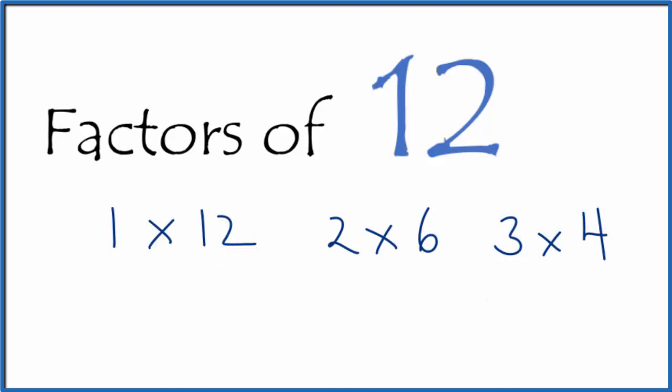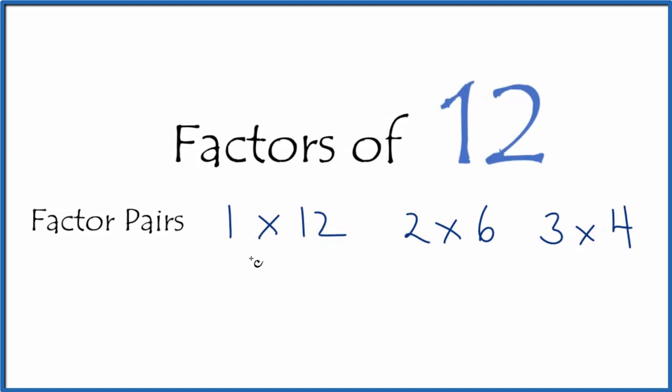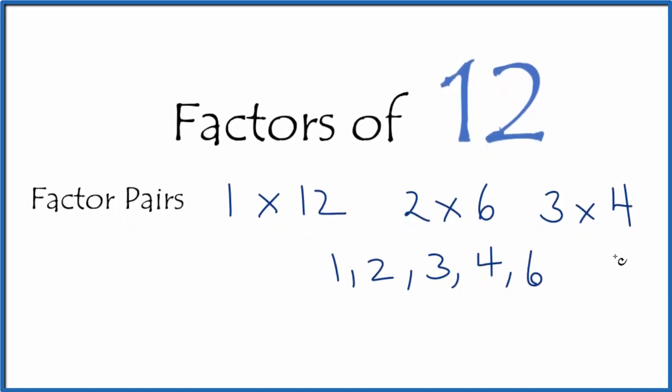We call these factor pairs. So we have the factor pairs of 12. To write the factors, we just find the unique numbers: 1, 2, 3, 4, 6, and 12.